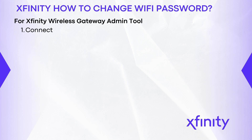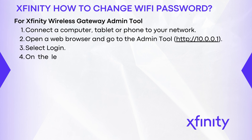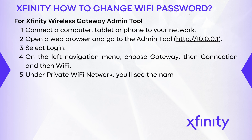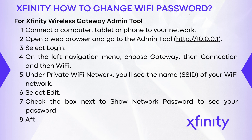For the Xfinity wireless gateway admin tool, connect a computer, tablet, or phone to your network. Open a web browser and go to the admin tool. Select Login. On the left navigation menu, choose Gateway, then Connection, and then Wi-Fi. Under Private Wi-Fi network, you'll see the name — SSID — of your Wi-Fi network. Select Edit. Check the box next to Show Network Password to see your password. After making changes, select Save Settings.